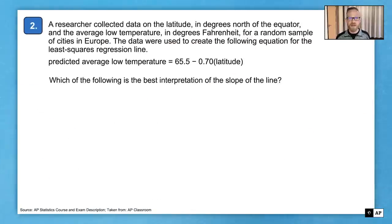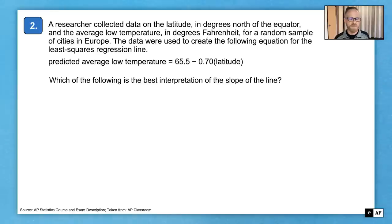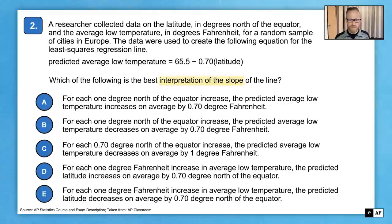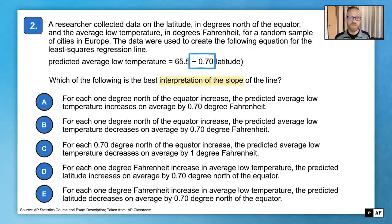Question two: A researcher collected data on the latitude in degrees north of the equator and the average low temperature in degrees Fahrenheit for a random sample of cities in Europe. The data were used to create the following equation for the least squares regression line. Which of the following is the best interpretation of the slope? The slope in the equation is negative 0.70. Going back to algebra, slope is the change in y over the change in x — in context, that's the change in average low temperature divided by the change in latitude.